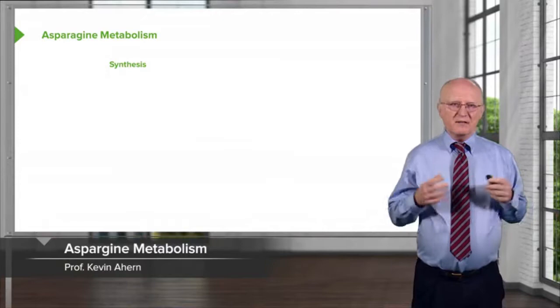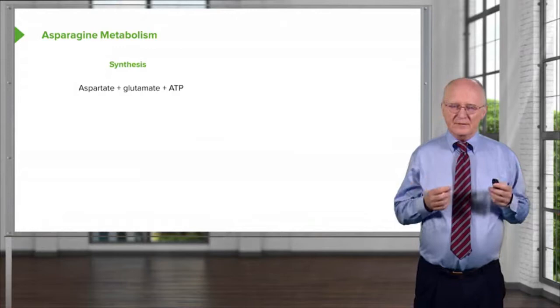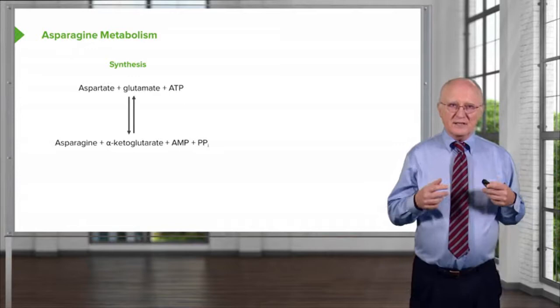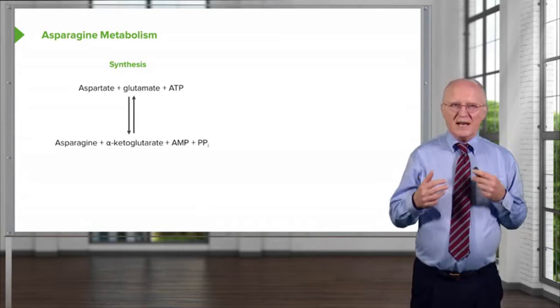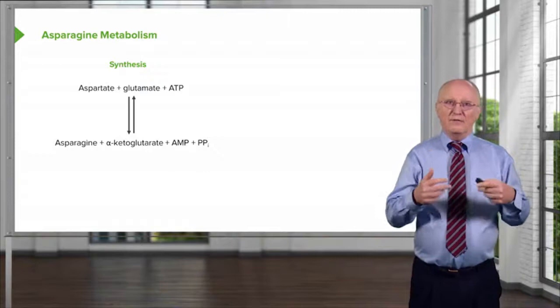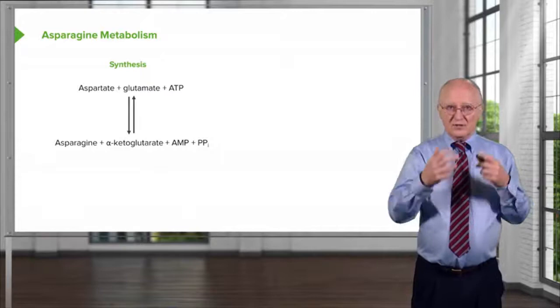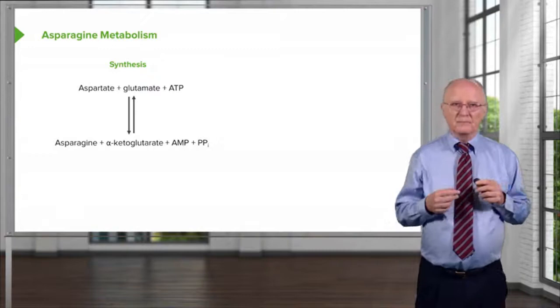The synthesis of asparagine occurs from aspartic acid in a fairly simple fashion. We can see here that if we start with aspartate and glutamate and we add ATP, we can create asparagine and alpha-ketoglutarate plus AMP. Now this is a transamination, but this is a transamination that's a little bit different in the sense that it's requiring additional energy to do that. Why does that happen? Well, the reason is we're not putting the amine onto the alpha-keto group. We're actually putting the amine onto the carboxamide group at the end of asparagine. That requires energy.